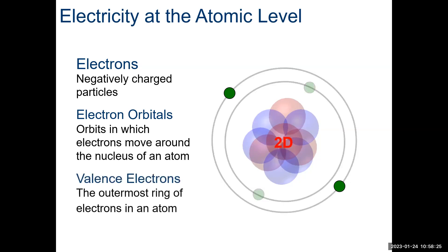So, the valence electrons are the outermost electrons of an atom. This one has two in its outermost orbit.